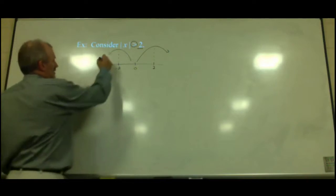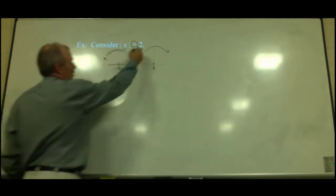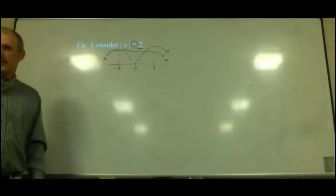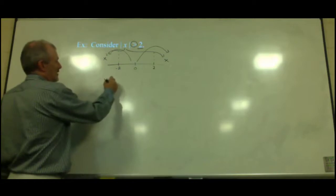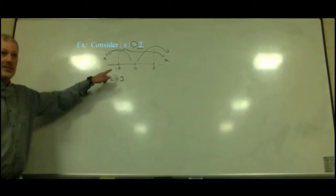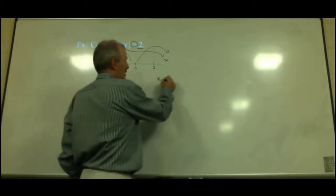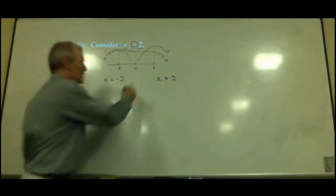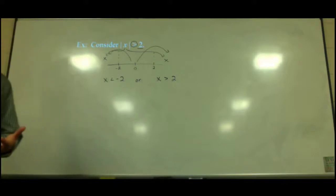So this is where x could be: x is less than negative two, or x is greater than positive two. Because it's these two separate areas, this is an or statement — either one could be true.